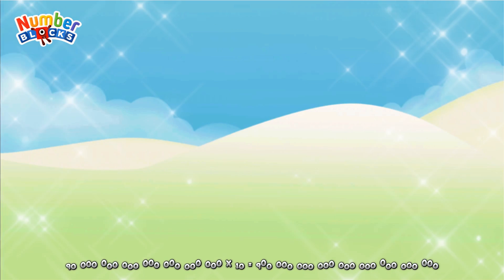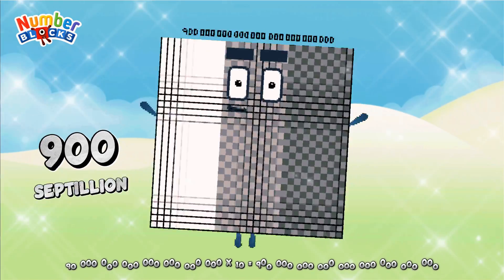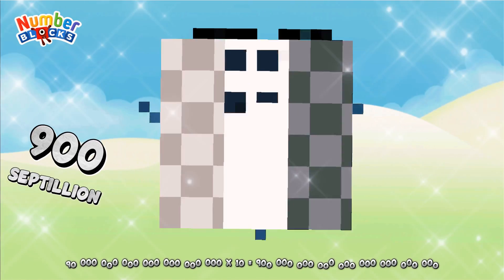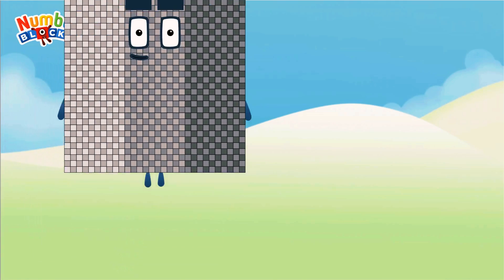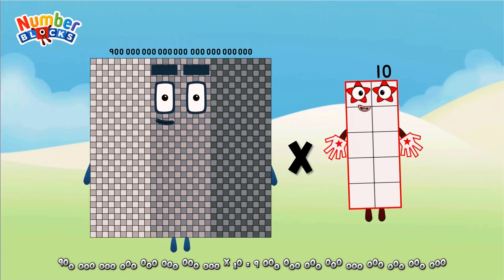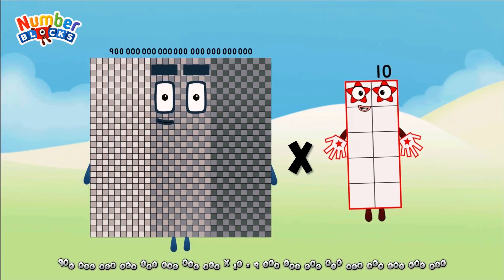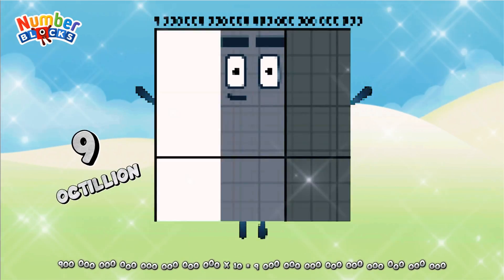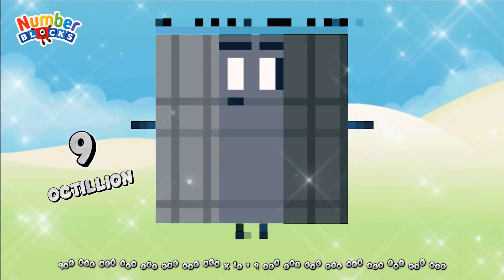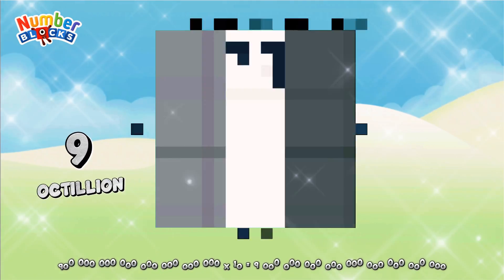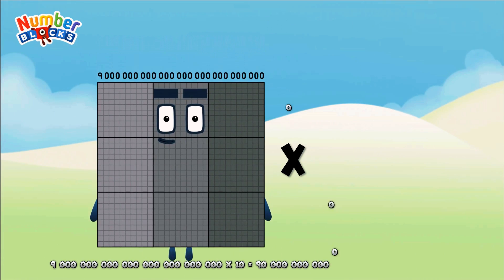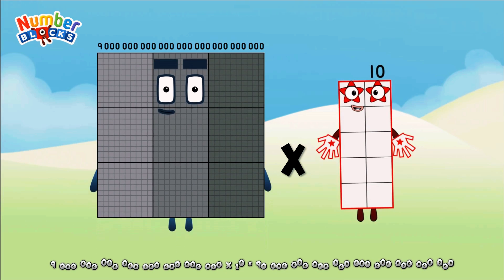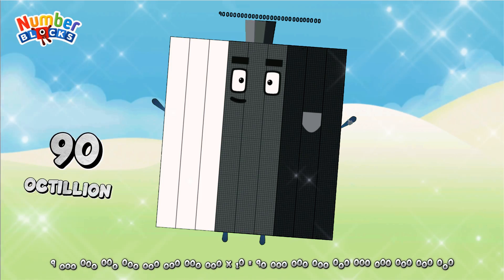Ninety septillion, multiplicated by ten, equals nine hundred septillion. Nine hundred septillion, multiplicated by ten, equals 90 octillion.